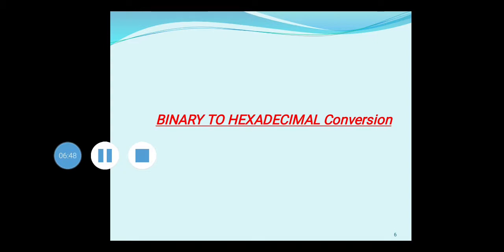The next topic is binary to hexadecimal conversion. In the last topic we covered binary to octal conversion; now we move to binary to hexadecimal conversion. As a refresher, the hexadecimal number system consists of digits 0 to 9 and alphabets A, B, C, D, E, F — this is to be remembered.